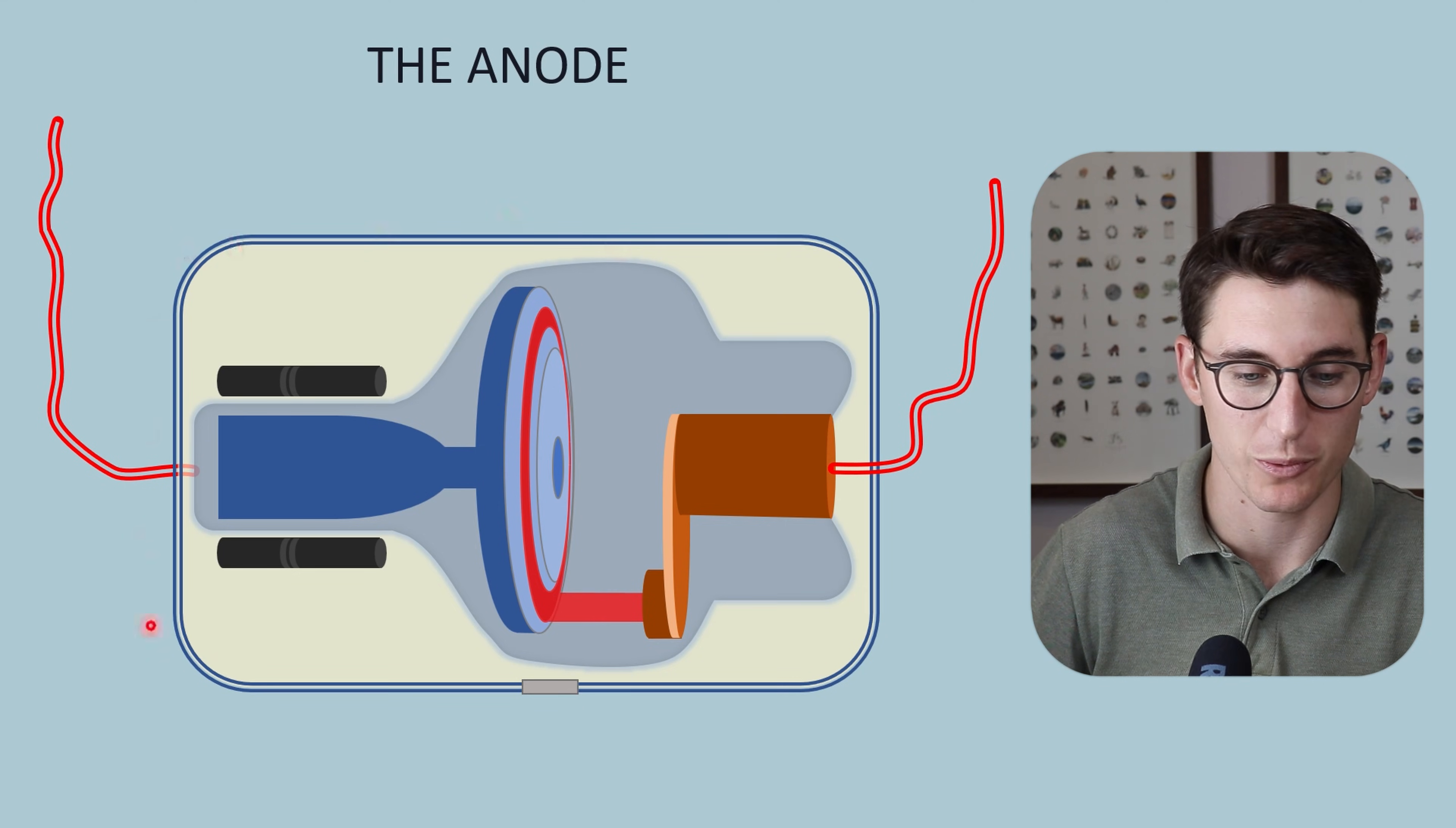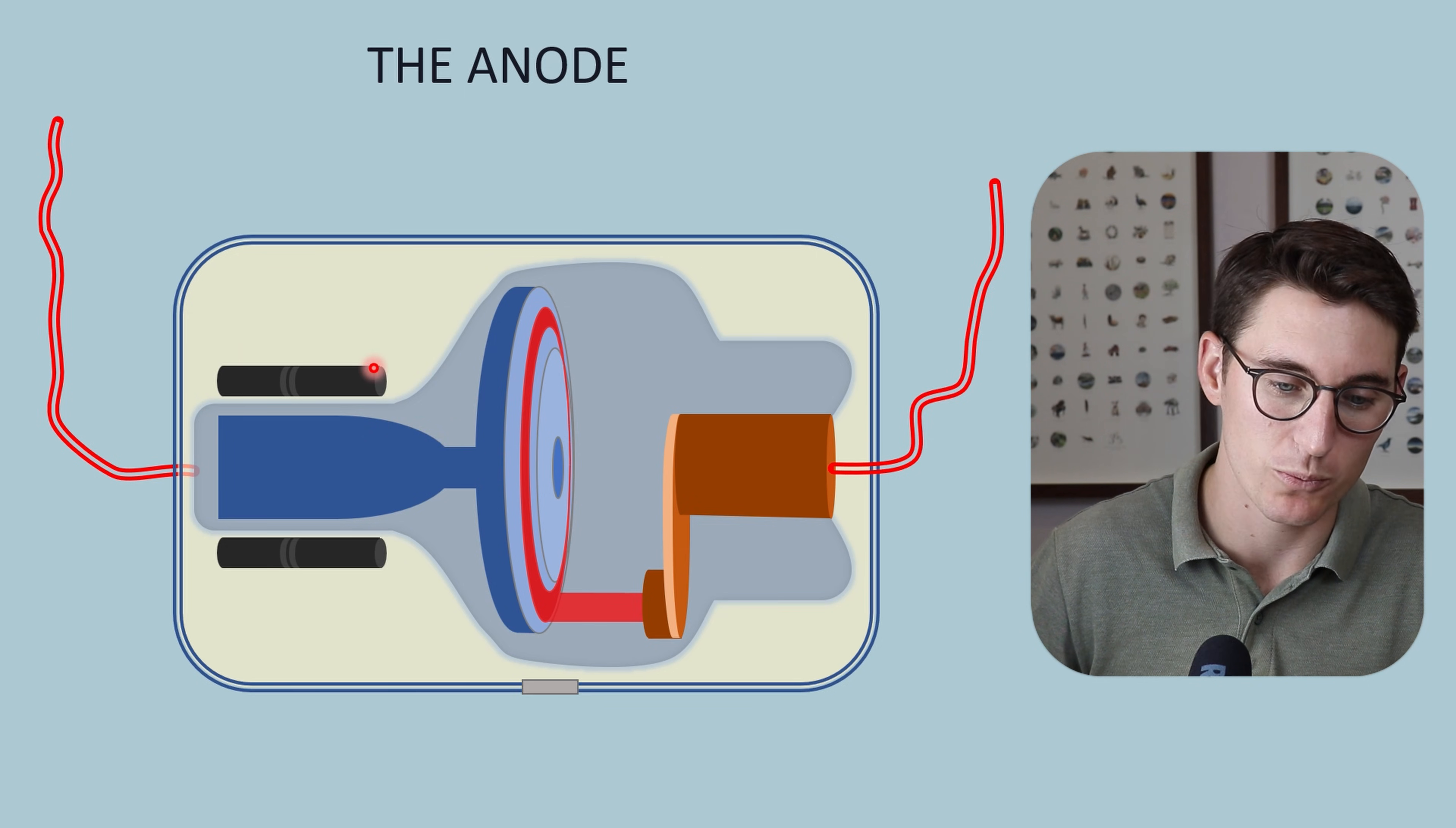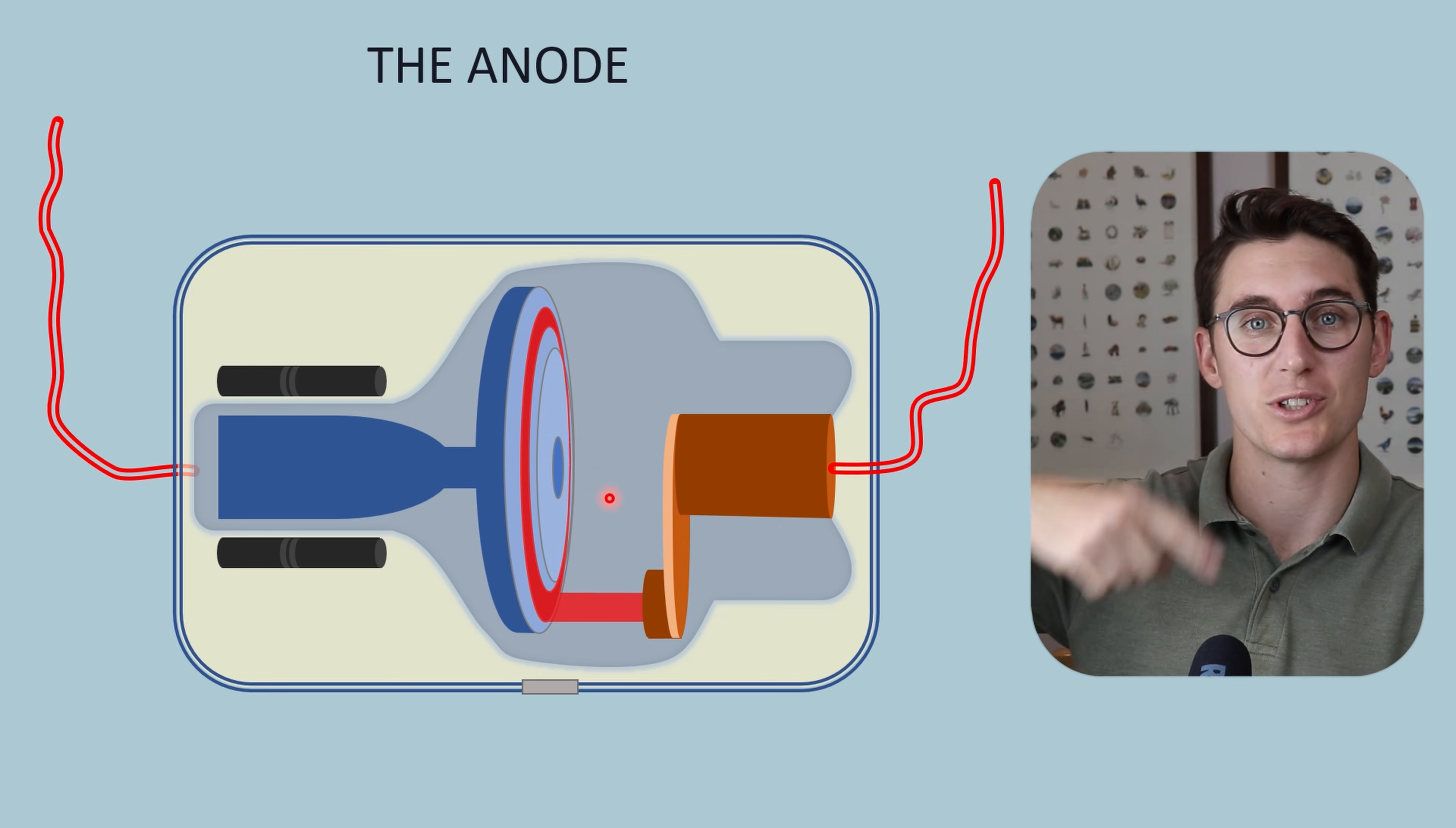If we look at our x-ray tube from the outside, the anode sits on a stem with an anode body. There are two motors that use electromagnetic induction to rotate this anode. This is known as a rotating anode.